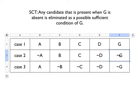We're representing in this table three different cases. In case one, A, B, C, and D are all present, as is G, our target feature.